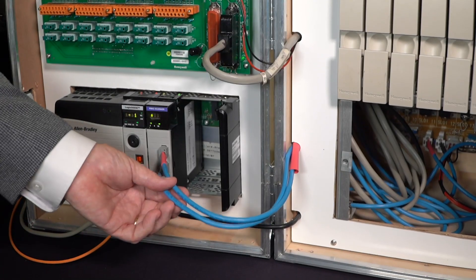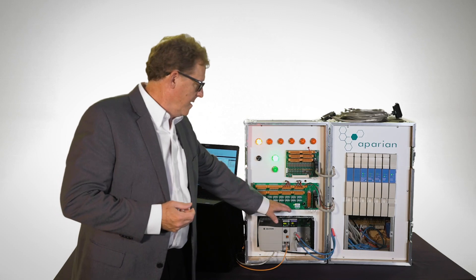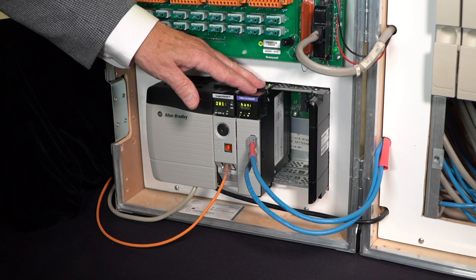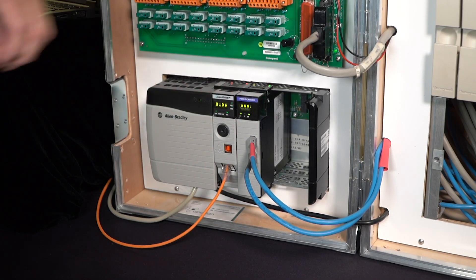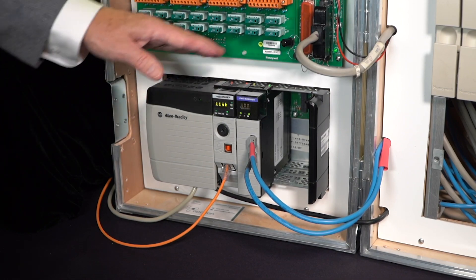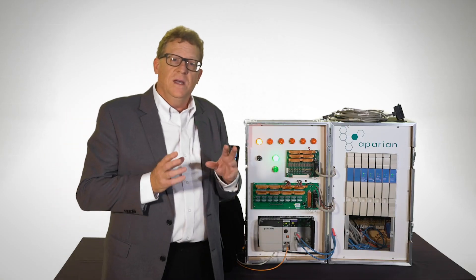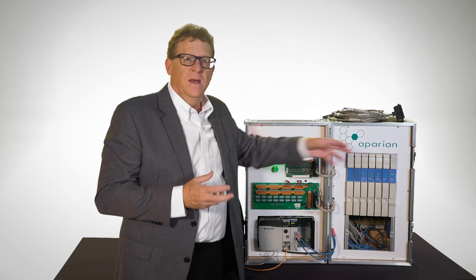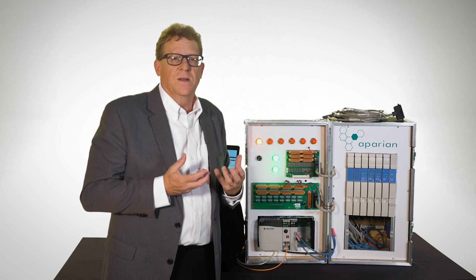These blue cables are the PMIO link cables connecting to the PMIO scanner. This scanner is shown in a ControlLogix chassis and it's in the run mode. Run mode here means it's controlling these IOPs as if they were native to the ControlLogix.